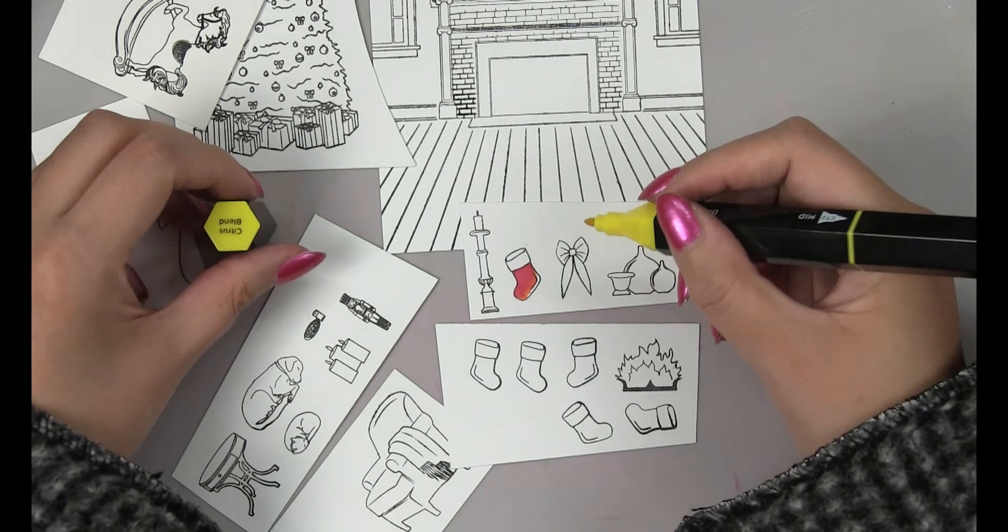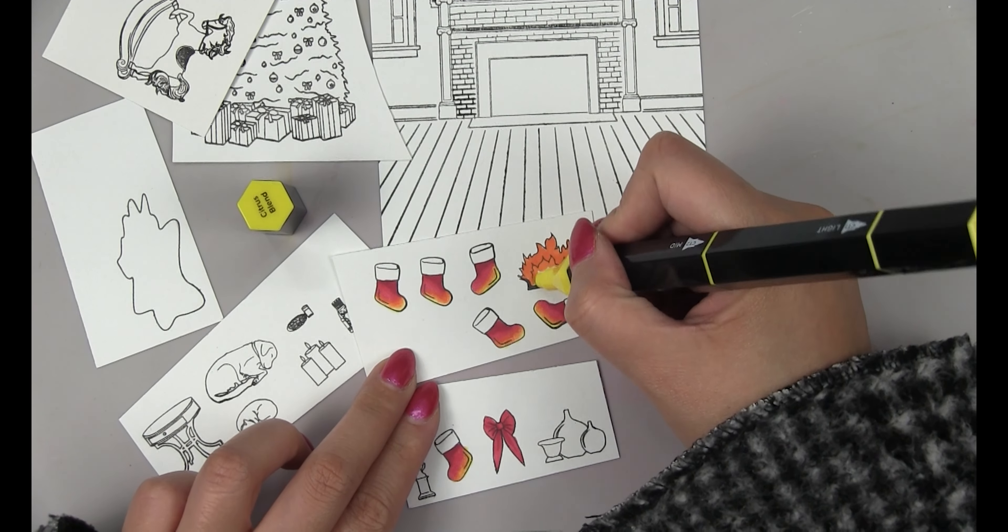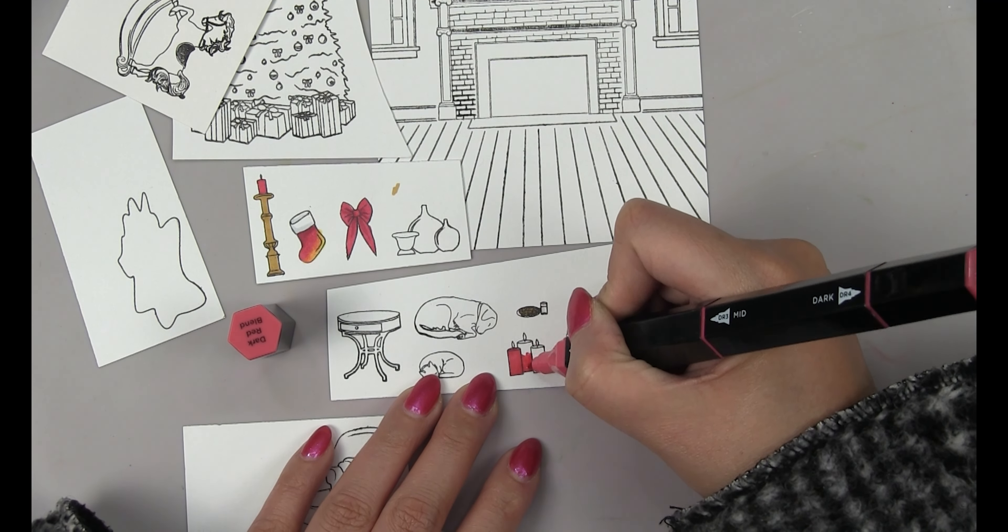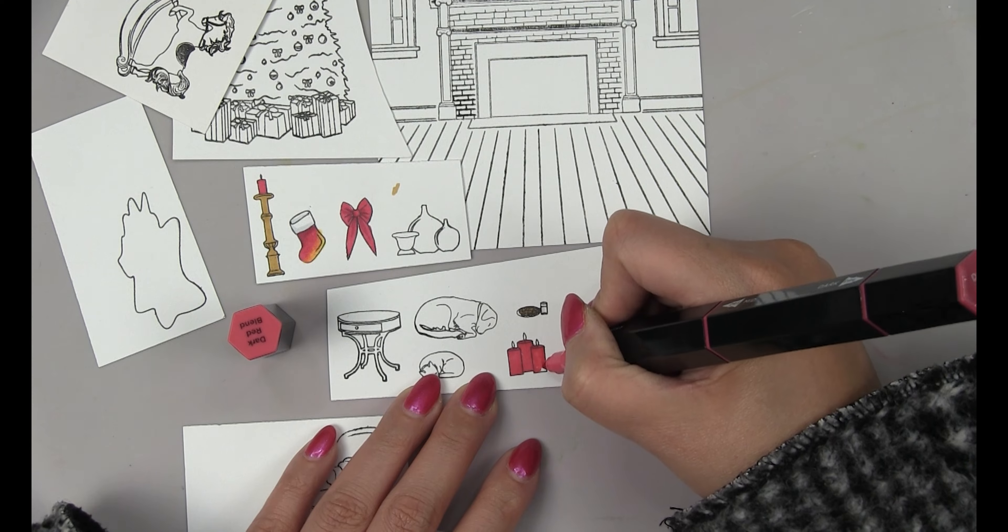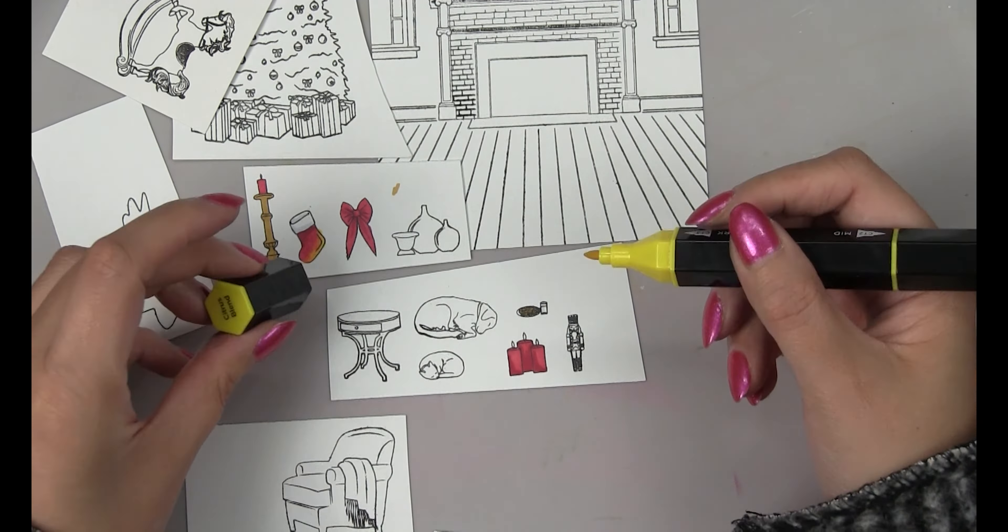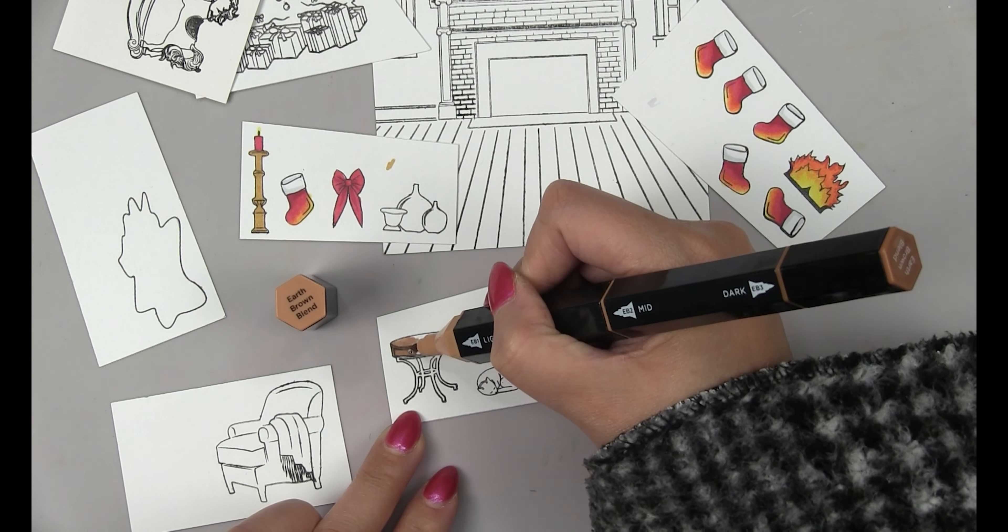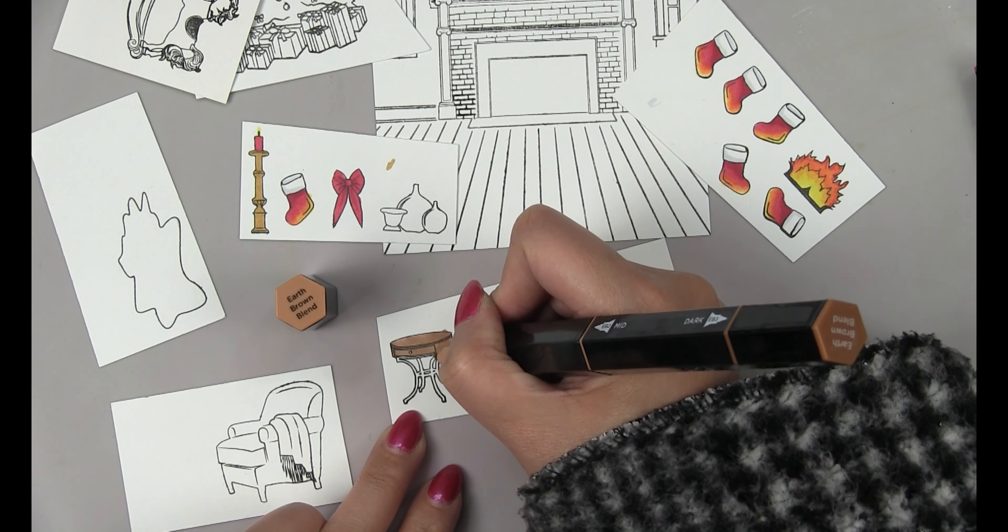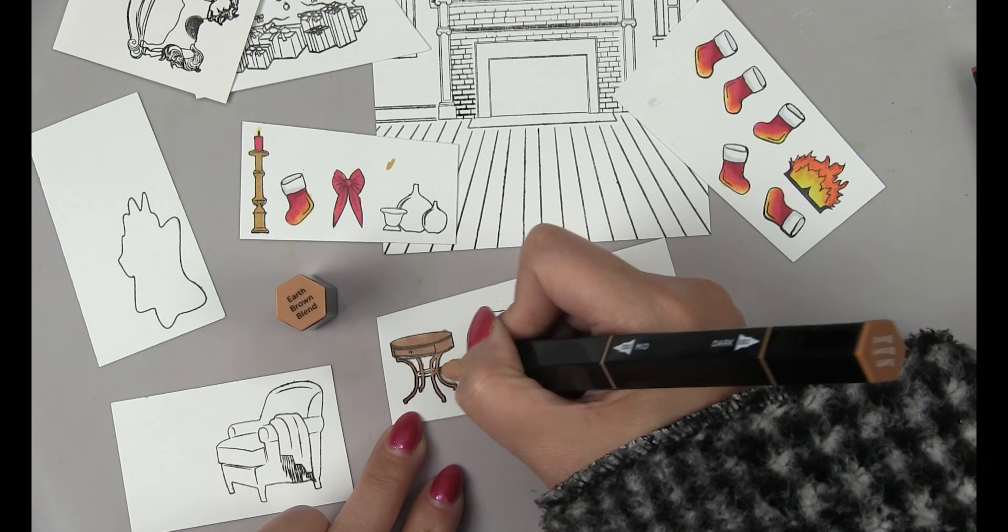Next I use the light red and dark red onto the bow and then I use orange and yellows for the fire. Next I color in the candles with the same light red and dark red markers. For the longer candlestick I used a light brown for the base and the red for the candle and I used yellows for the candle flame.